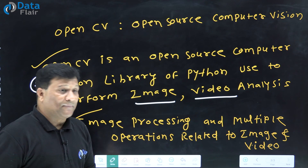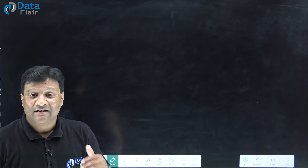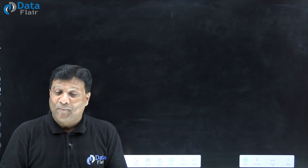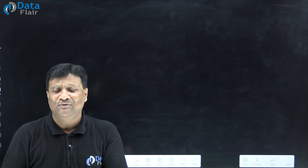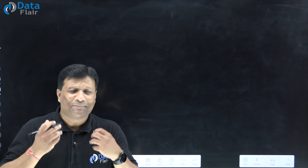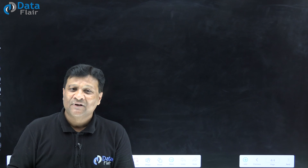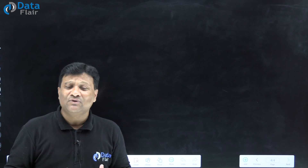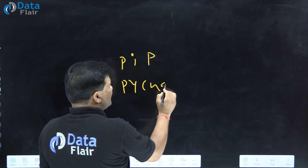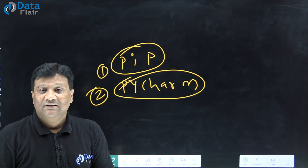Step one is to install this library on your machine. How to make an application after installation of OpenCV — I'll show you that. We are going to install OpenCV using the PIP command. Using PyCharm or another software, there are two options: use PIP command, or use PyCharm. You can also use another editor to get Jupyter Notebook, Anaconda, or any Python IDE — you can install using PIP commands.